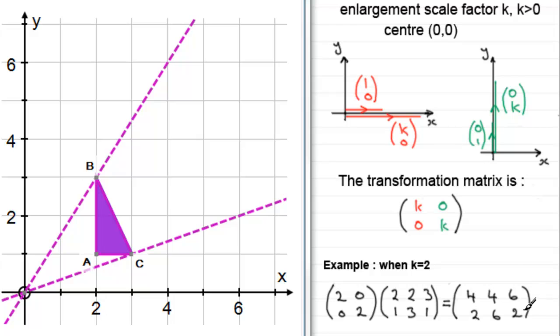And this is our image matrix. So that tells us that the point, for instance, A at (2,1) has now moved to (4,2). If we look at point B at (2,3), it's now moved to (4,6), which is this point here. And then finally, for C, which was at (3,1), it's now moved to (6,2), which is that point there.